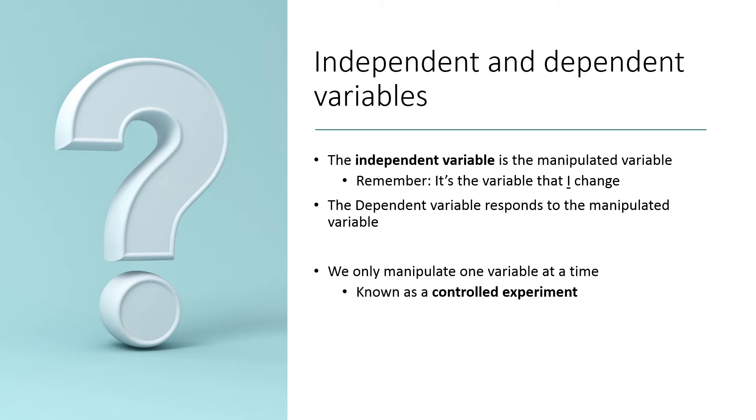All of the other variables that are in the experiment, and we'll go over an example of this in class, they're going to stay the same, and we're going to call those control variables. If we do that and manipulate only one variable at a time, then we have what is called a controlled experiment.